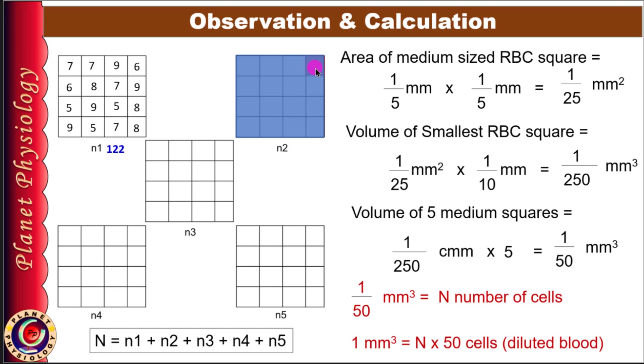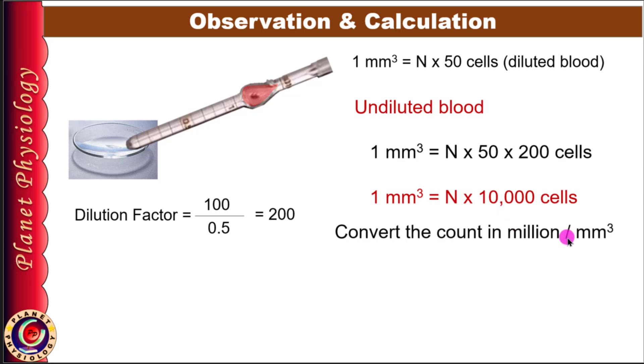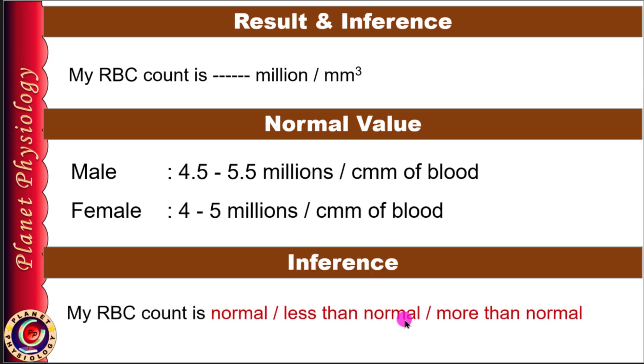So this is your RBC count in diluted sample. To get the count in undiluted sample, multiply by the dilution factor which is 200, because you have taken blood up to 0.5 and diluted till 101. So the final step of calculation is N × 50 (volume factor) × 200 (dilution factor), giving N × 10,000. This is the RBC count in undiluted blood. Convert your count in terms of million per cubic millimeter to express it in normal units. Compare your results with the normal value to conclude if your count is within normal range, whether it is low suggestive of anemia or higher suggestive of polycythemia.